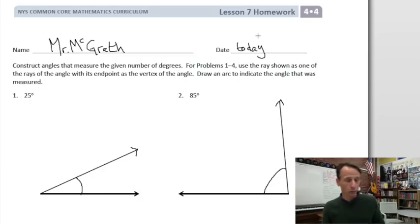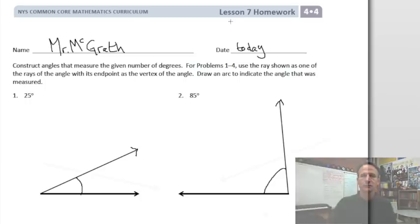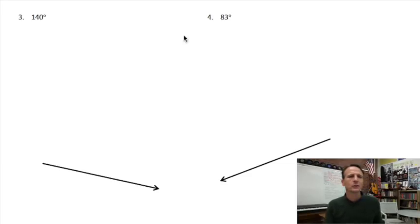Let's go on to three and four with the same instructions. Here in three and four we see a small difference, in that the rays we've been given are no longer parallel to the bottom of the page, they're themselves at an angle.